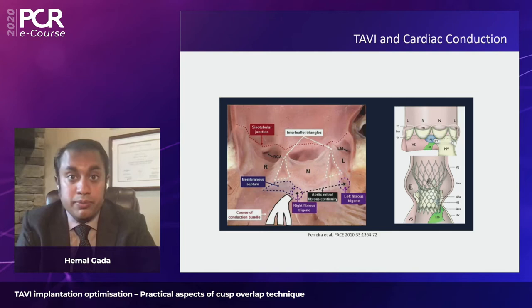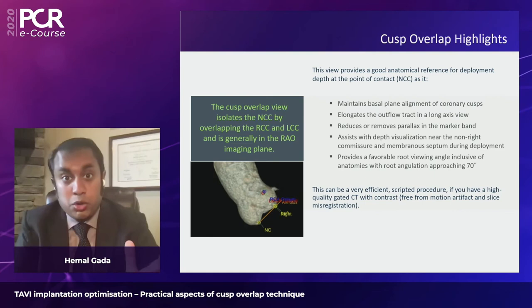By isolating the non-coronary cusp, we remove parallax that can occur in other views, allowing certainty about implantation depth. Parallax is the oversimplification of a three-dimensional structure into a two-dimensional imaging plane, losing reference to critical points because there is no z-axis represented. Our traditional coplanar view had us deploying valves with the non-right and left equidistant, but now we move in an aortocaudal direction along the S-curve.